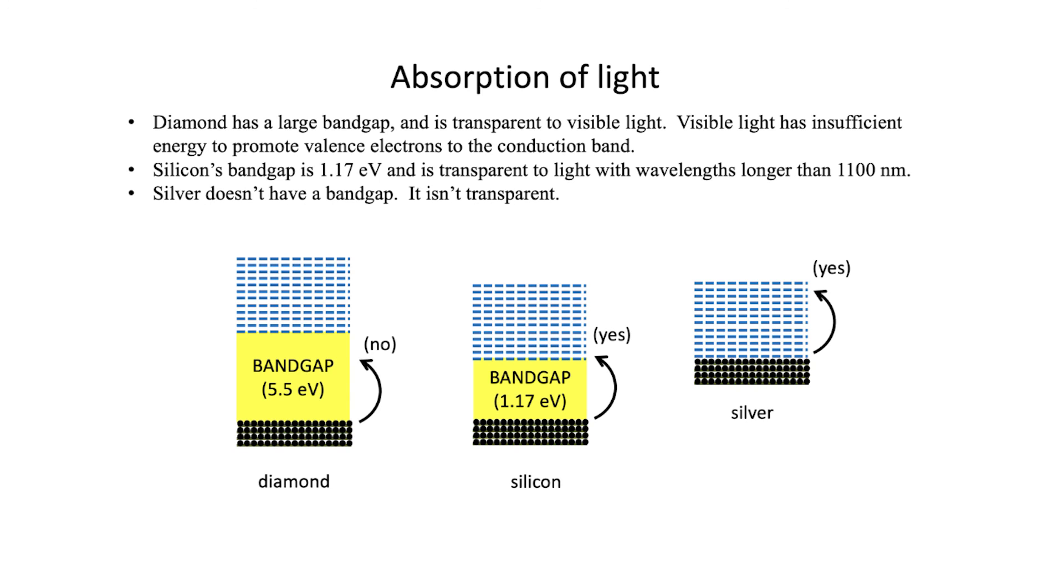I've mentioned transparency before. Let's take a quick look at diamond, silicon, and silver. Silicon's band gap is 1.17 electron volts, and it's transparent to light with wavelengths longer than 1,100 nanometers. This means that silicon is transparent to infrared light, but not to visible light. Diamond, however, is transparent because visible light cannot excite one of those valence electrons into the conduction band. Visible light is not energetic enough for diamond, but it is for silicon. Silver, on the other hand, has lots and lots of open states in the conduction band. It's very easy to excite one of these electrons in silver. And obviously, silver's not transparent.